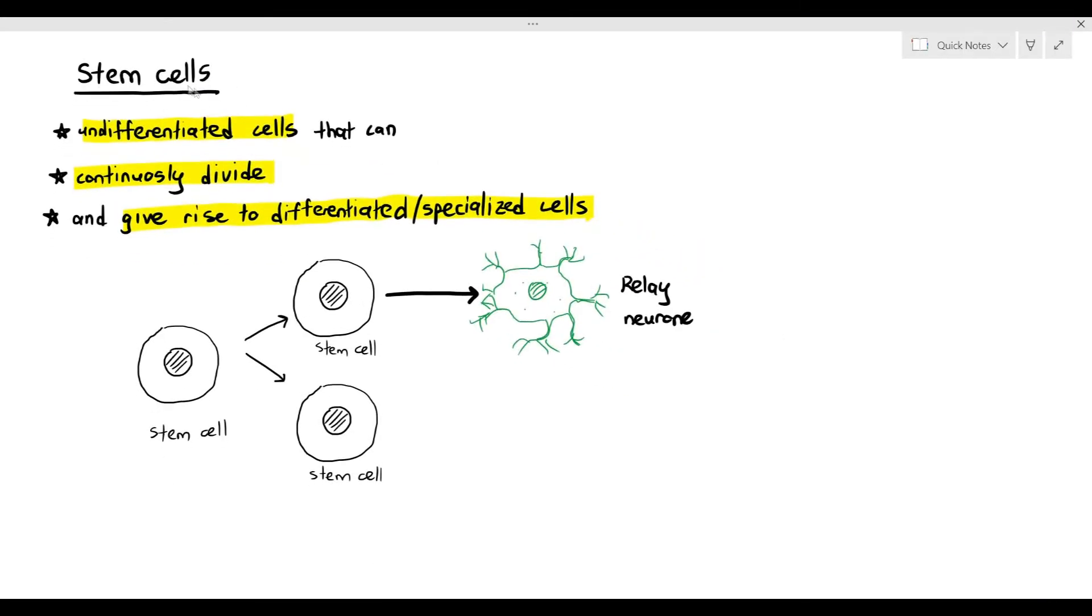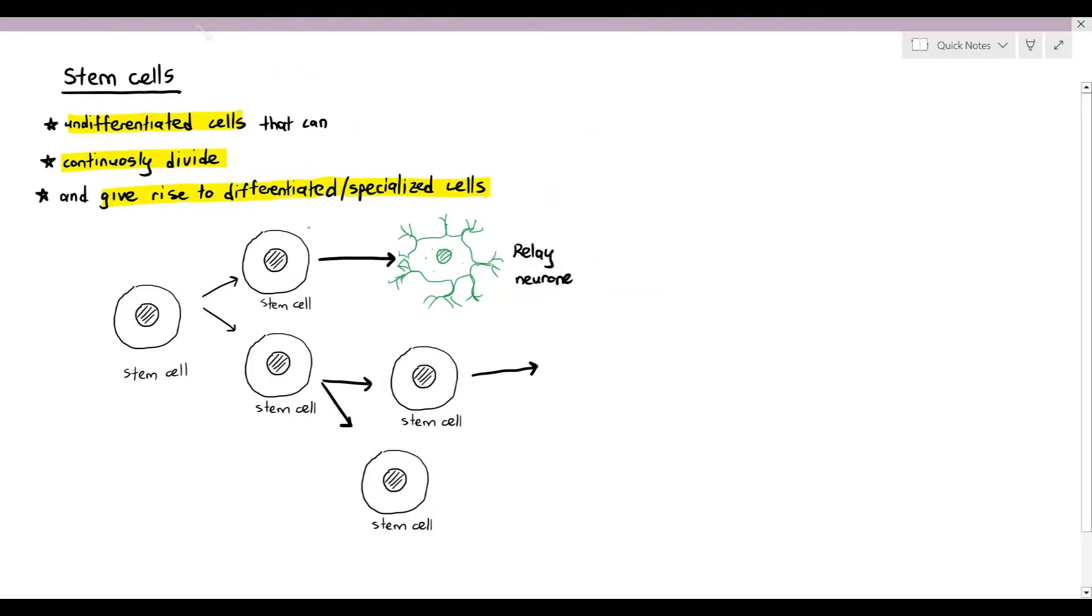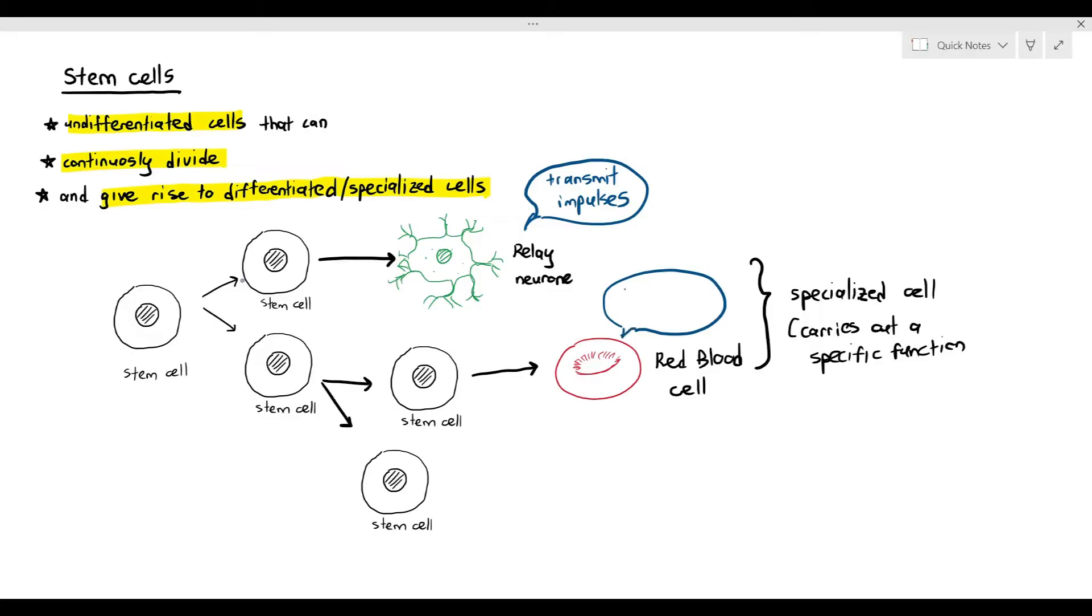The stem cell at the bottom, however, still decides to continue to divide. And when it divides, some of the stem cells will then become red blood cells. So the red blood cell and the relay neuron are said to be specialized cells because they carry out specific functions. Relay neuron transmits impulses and the red blood cell carries oxygen. One of the stem cells at the bottom there remains undifferentiated. What does it mean by undifferentiated? Well, it can basically choose to continue either dividing or it can also choose to specialize into any cell in the body that the body requires.